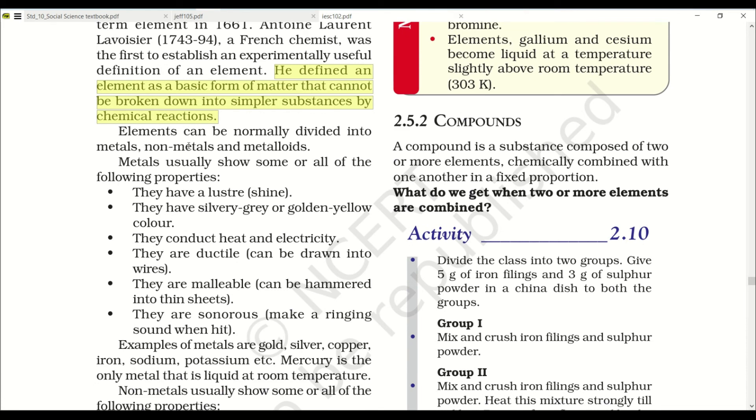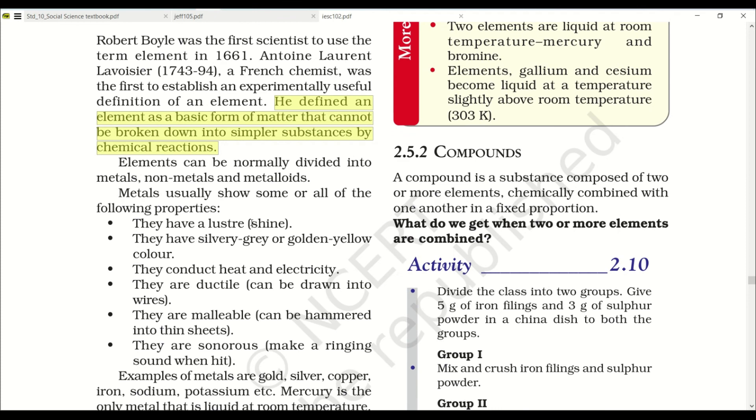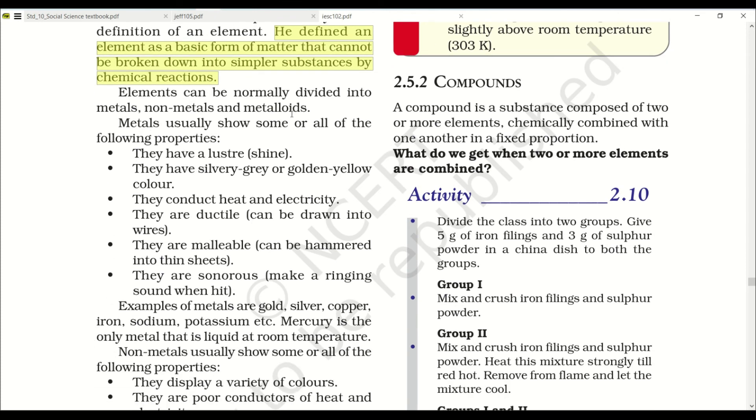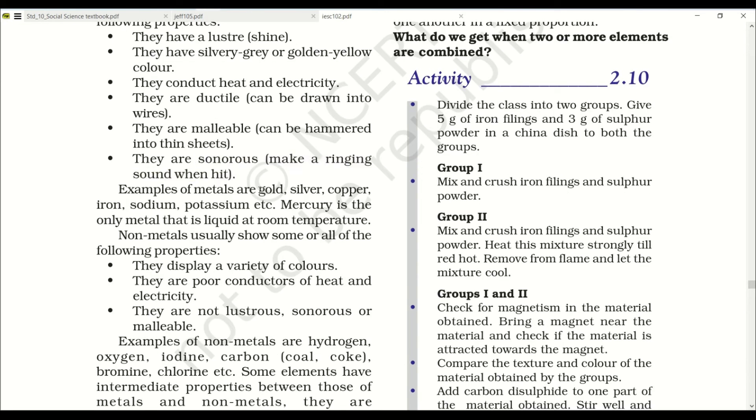Elements can normally be divided into metals, non-metals and metalloids. Pure substances are divided into two parts: elements and compounds. Elements can be further distributed into three parts: metals, non-metals and metalloids. Metals usually show some or all of the following properties: they have luster, that is shine. They have silvery grey or golden yellow color. They conduct heat and electricity. They are ductile, means they can be made into wires. They are malleable, that means they can be hammered into sheets. They are sonorous, that means they produce sound on striking. Metal examples are gold, silver, copper,